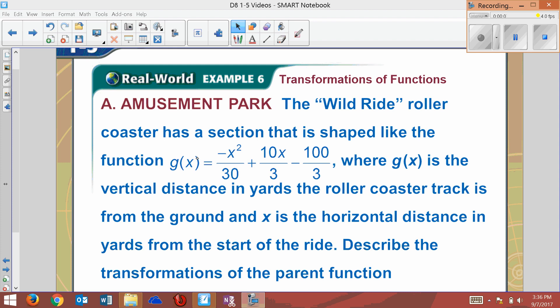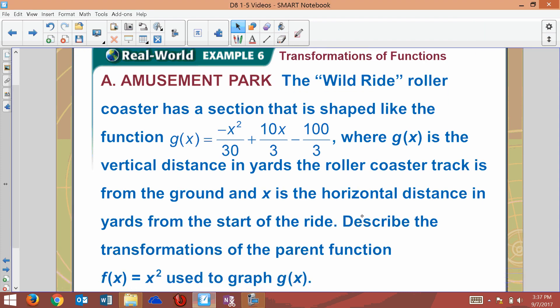Alright, what we have here is a new problem that's a lot trickier than anything we've seen so far. We have an amusement park roller coaster ride where the y-axis tells us the distance the roller coaster travels vertically in yards, and the x-axis refers to distance horizontally traveled in yards from the start of the ride. Now the problem asks us to describe the transformations from x squared to get to this function.